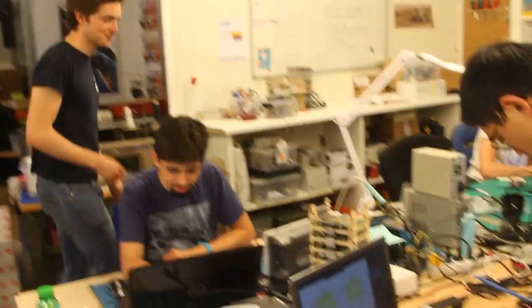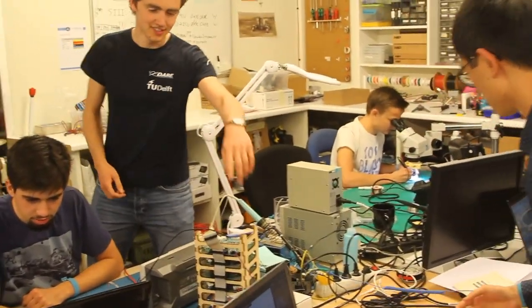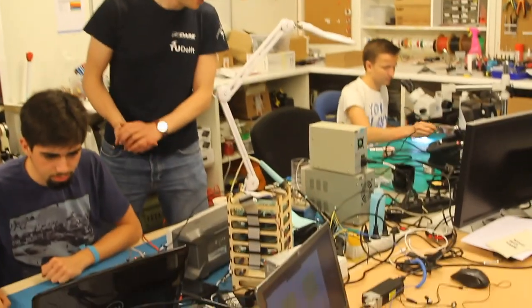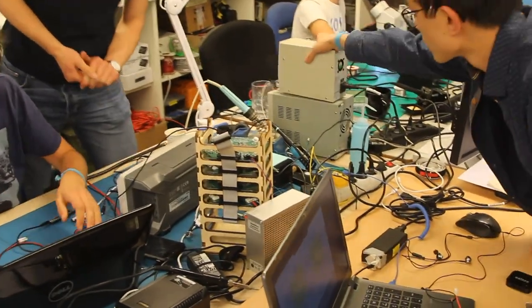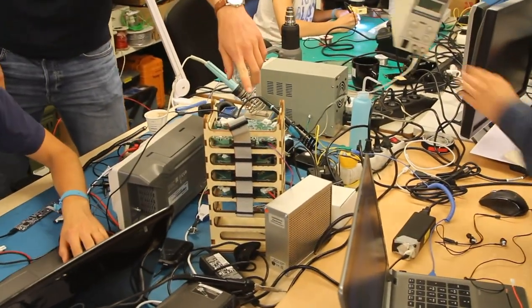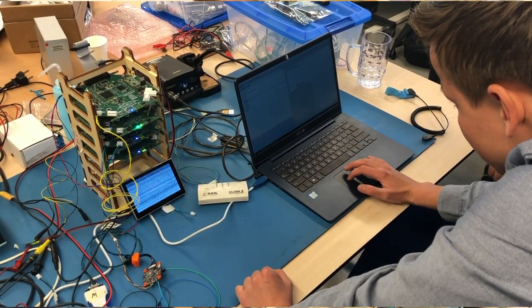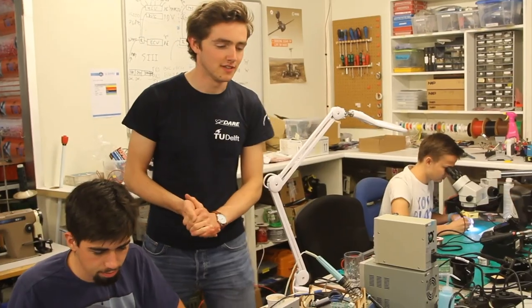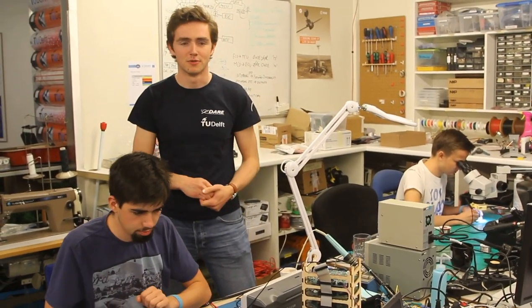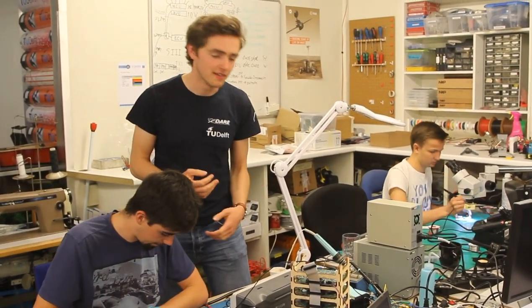Here you see the lightning feature of Stratos 4 standing in the test setup. We have four PCBs here. The telemetry board makes sure that we have a live stream of the video and also sends down the important data from the rocket so that we can retrieve the data.